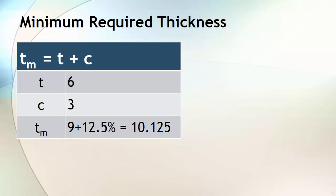To simplify your understanding, let's assume that for a 6-inch pipe you have calculated your pressure design thickness based on the equation given in ASME B31.3 and that comes to 6 mm. So to get minimum required thickness, you have to add mechanical allowances — corrosion allowance and erosion allowance. Let's assume that is 3 mm. So by summing it up, we will come to 9 mm.